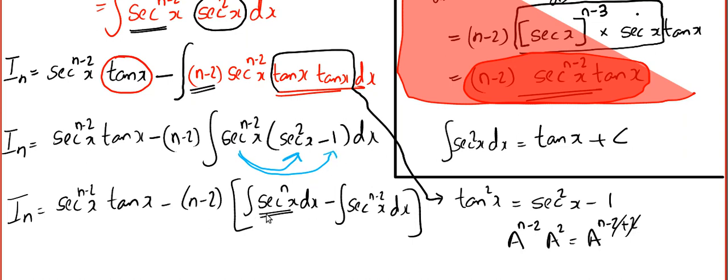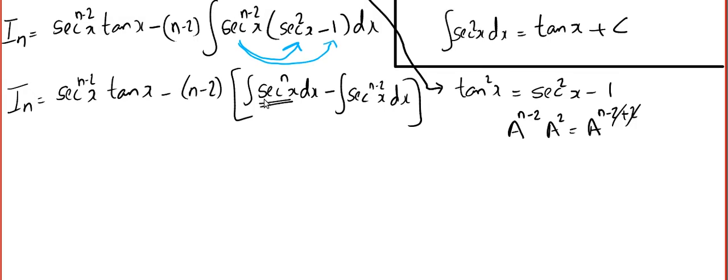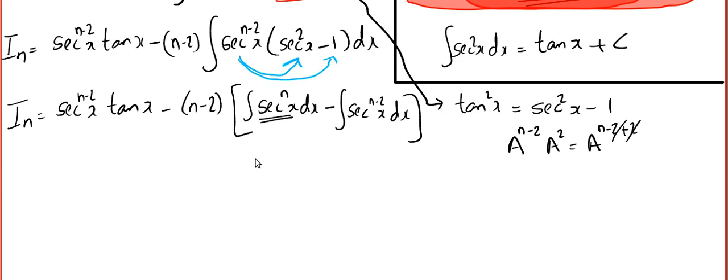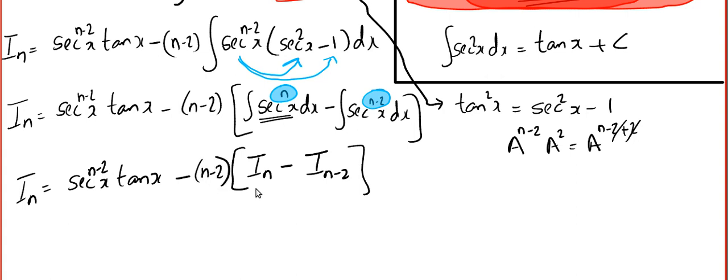And then the same thing, then I split the integral. Wait a minute, I have seen this person. Yeah, the question. Look at the question. Integral sec to the power nx is nothing but our In. So this is actually our In and this is as expected In minus 2 because the power is n minus 2.